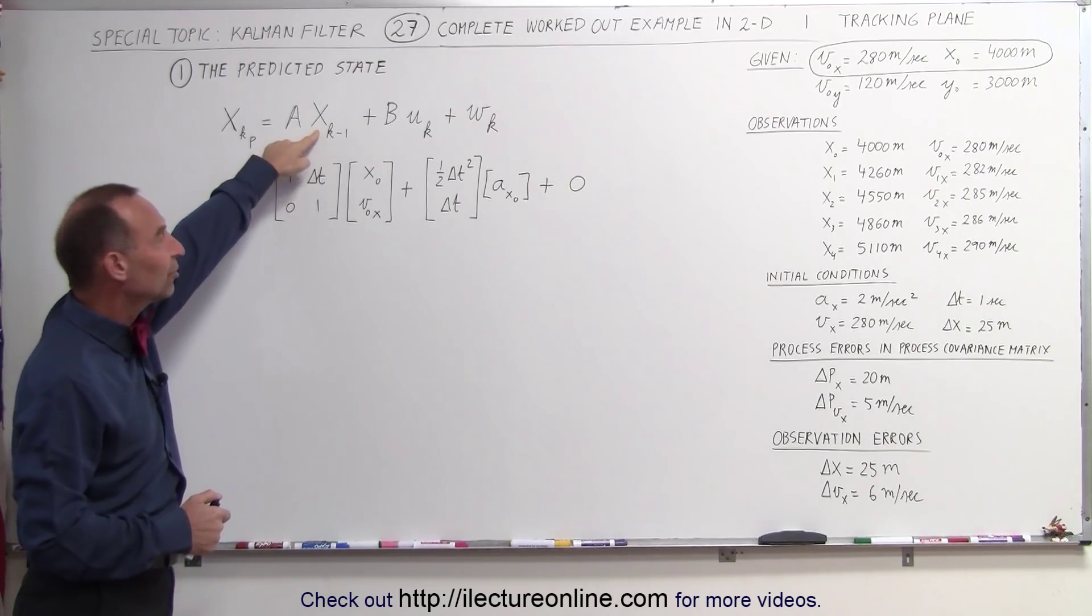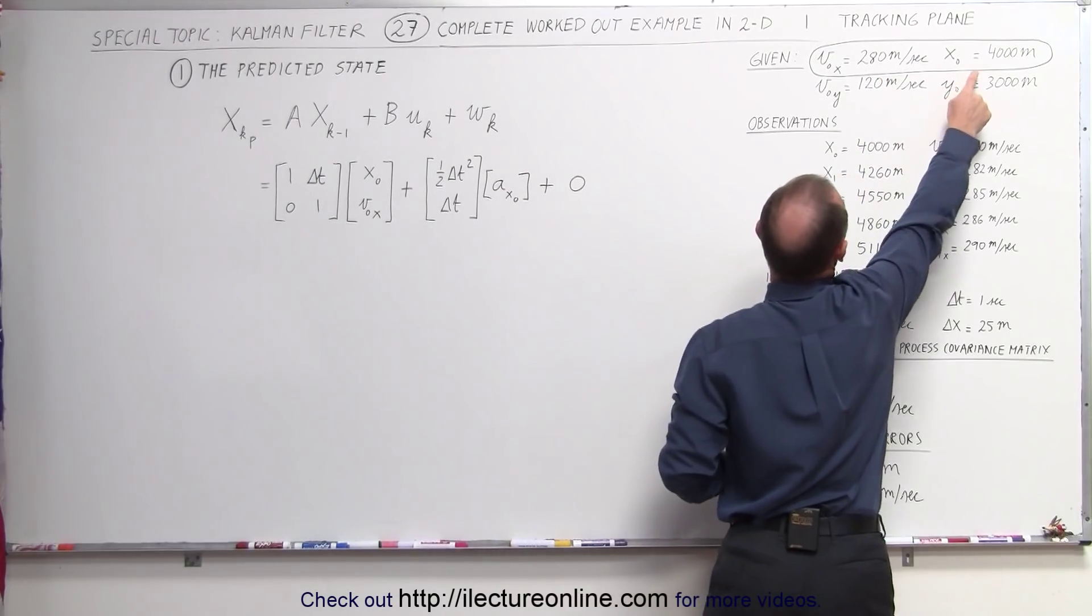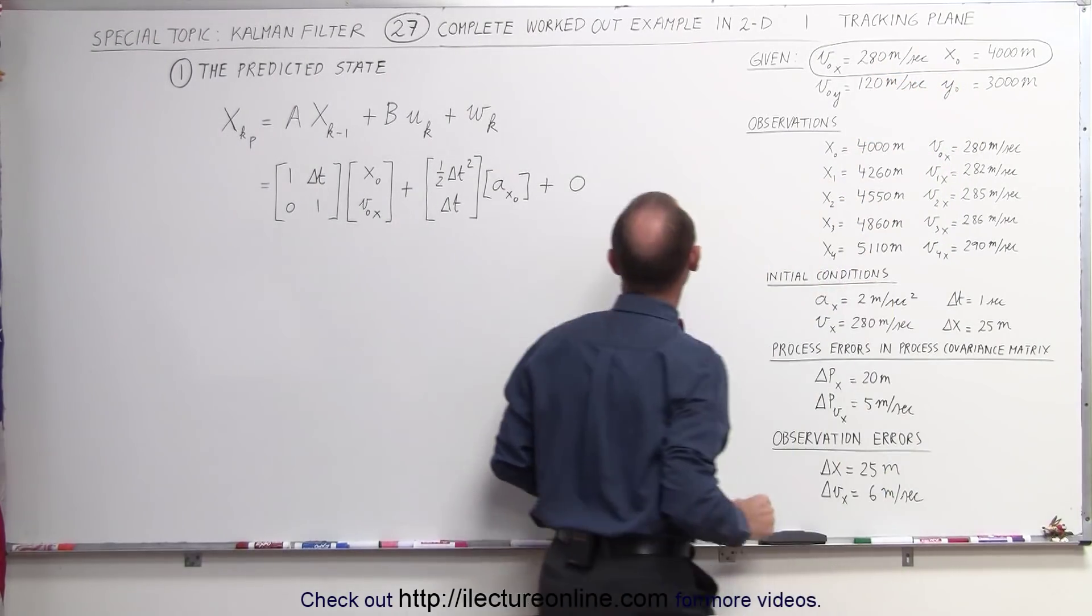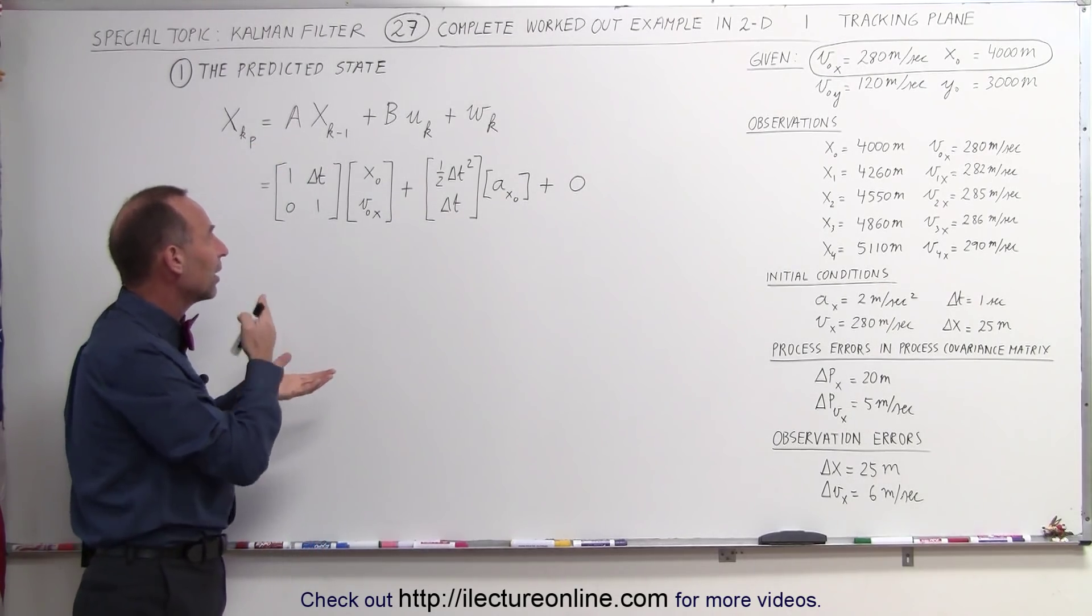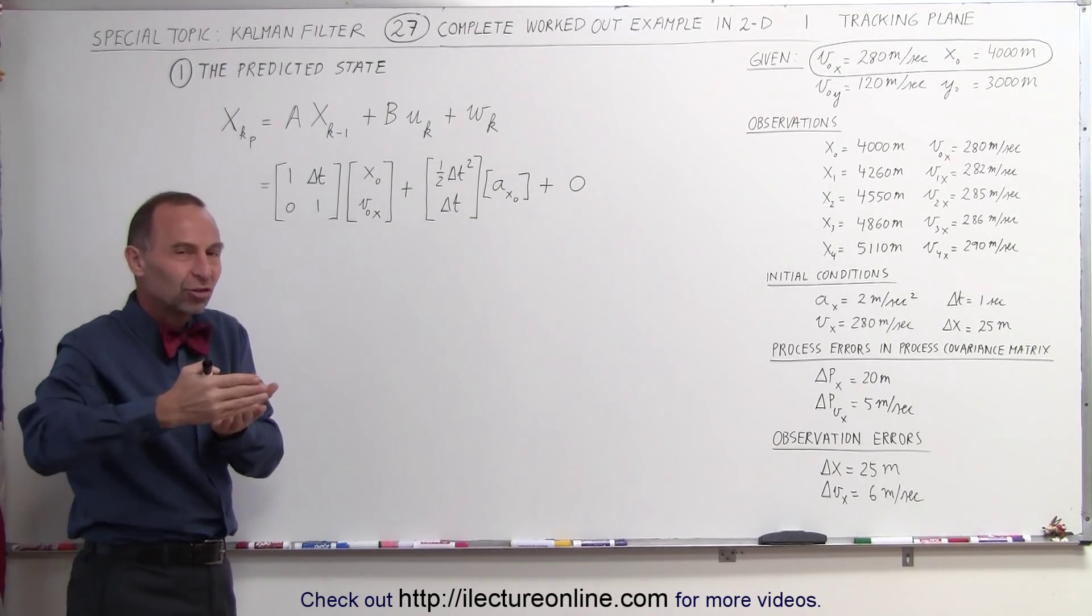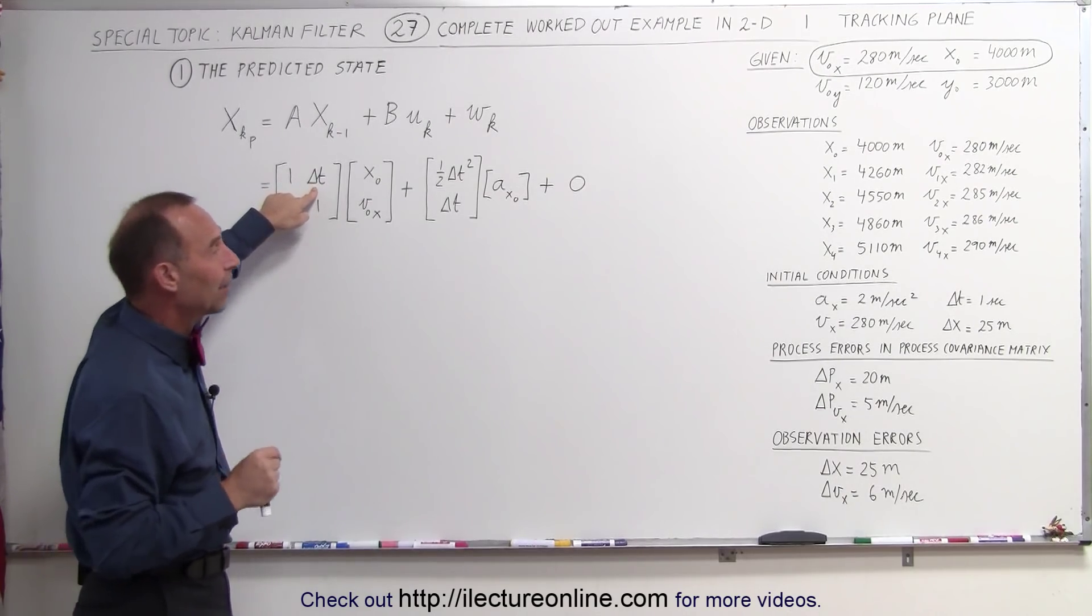We multiply the previous state, which were determined by the initial conditions that we chose, the initial position and the initial velocity, and we have to multiply that times the A matrix. Now the A matrix is a matrix that allows us to update the position and the velocity based upon the amount of time that has elapsed, the delta t.